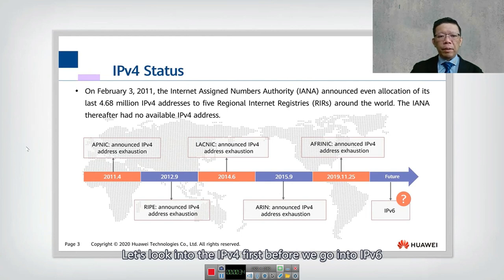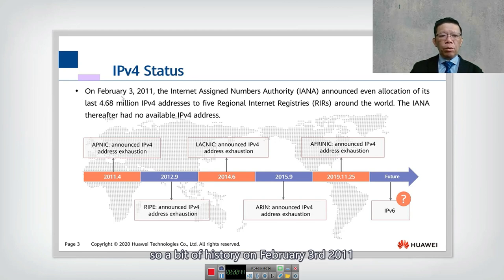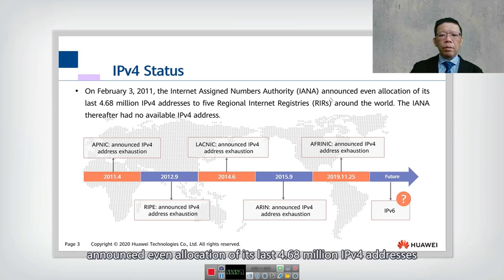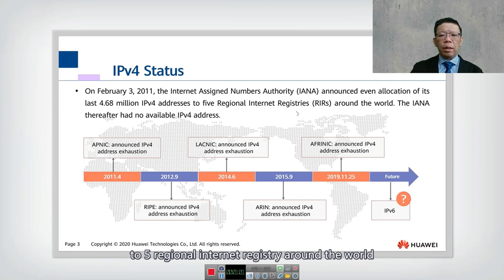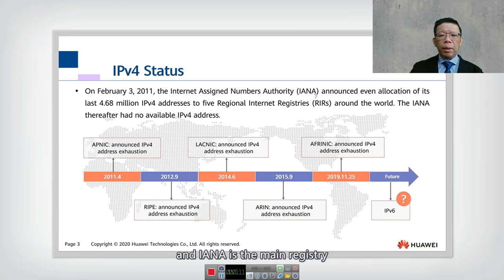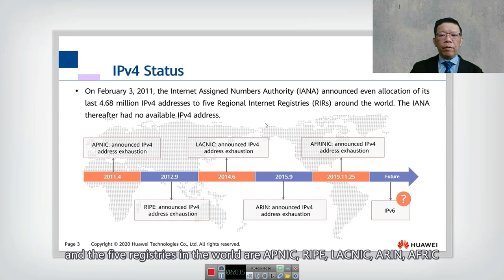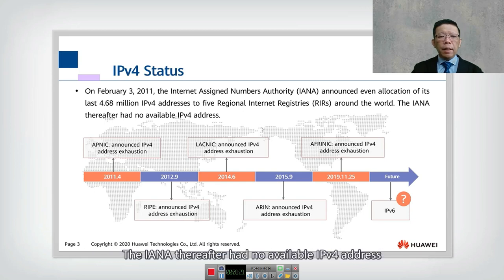Let's look into IPv4 first before we go into IPv6, because we need to understand why IPv4 is transitioning to IPv6. On February 3rd, 2011, the IANA — Internet Assigned Numbers Authority — announced the allocation of its last 4.68 million IPv4 addresses to five Regional Internet Registries around the world. IANA is the main registry in charge of IPv4, and the five registries are APNIC, RIPE, LACNIC, ARIN, and AFRINIC.